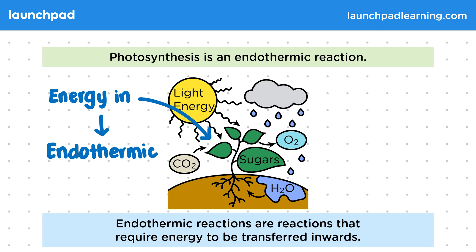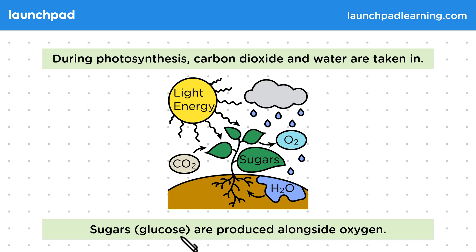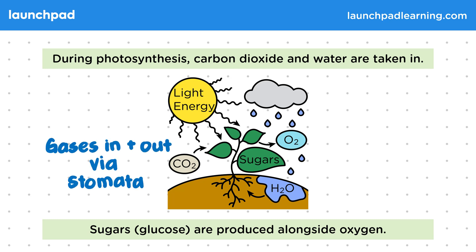What are the reactants and the products of photosynthesis? During photosynthesis, carbon dioxide and water are taken in. This diagram shows the process of carbon dioxide being taken in at the leaves and water taken up via the roots. Sugars and oxygen are made from this reaction, with the waste product oxygen being released from the leaves. Remember that the gases move in and out of the leaves via the stomata using the process of diffusion, and the water moves up into the plant via the process of transpiration.